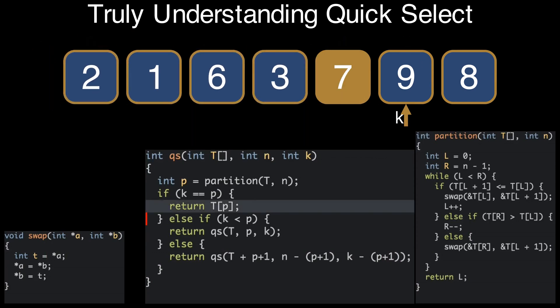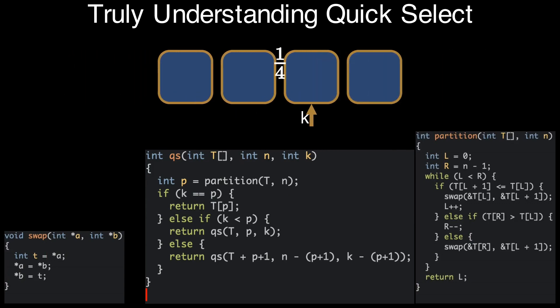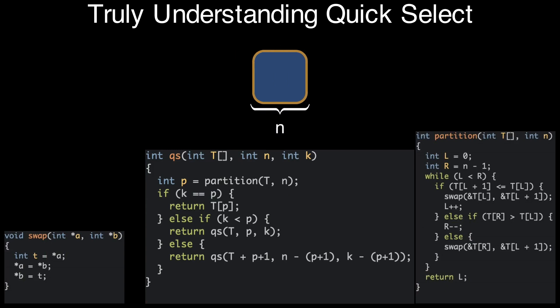One interesting thing to note about our implementation is the base case for the recursion. It does not necessarily occur when the array has a few elements, as is the case with most recursive functions. Instead, the base case occurs whenever the pivot happens to end up exactly on the position that we are looking for. This means that the recursion can stop early, and becomes more and more likely as the recursive calls process subarrays smaller and smaller in length. In particular, when n is 1, recursion stops for sure — k is guaranteed to be 0, the call to partition does nothing, it returns 0, which matches k, and therefore the recursion necessarily stops.